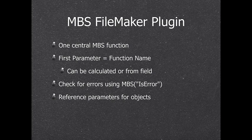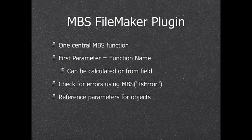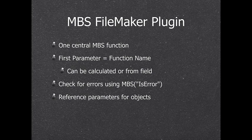If you want to check for an error, there is an isError function which tells you if the last function call returned an error. This is much better than checking the return value. We also have reference parameters — you can create an object like a SQL connection, get back a number, and use that number for other calls. On a server, five users can run scripts simultaneously, all talking to different SQL databases or different curl connections.